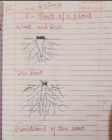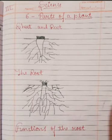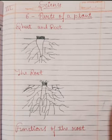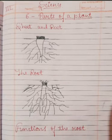The shoot has stem, branches, leaves, buds, flowers, and fruits. If we talk about roots, there are two types of roots: the first is taproot and the second is fibrous root.